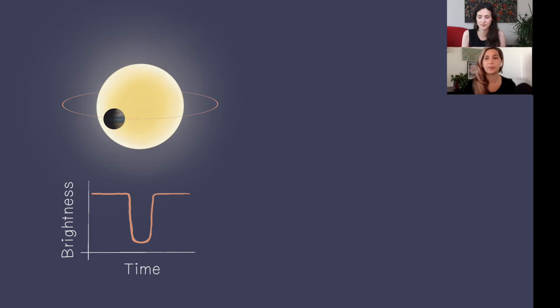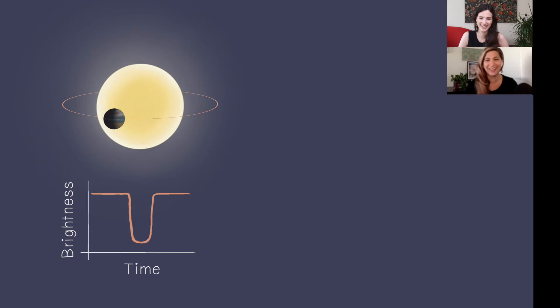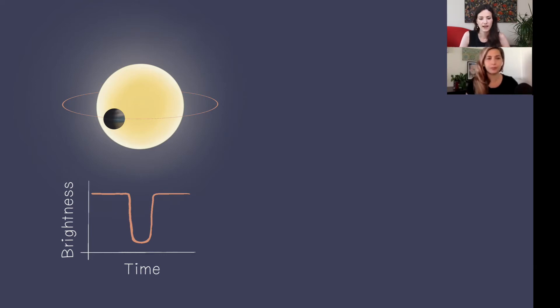These properties will help us determine more information about exoplanets — we want to know what kind of planets these are and whether we could go and live on them. We've talked about transit events in the past — this is when the planet blocks out the light. Now we're going to talk about what that dip actually means. The size of that dip depends on the fraction of light that the planet blocks out from the star.